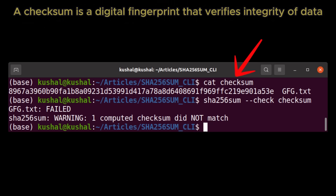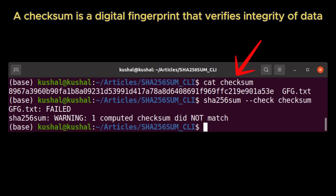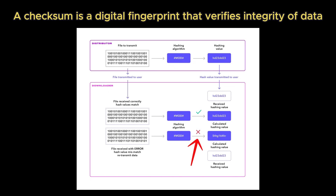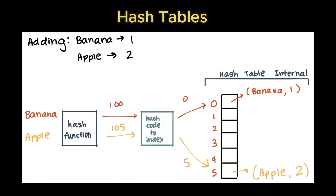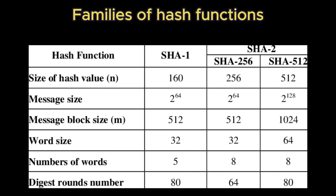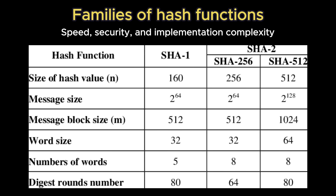Checksums use algorithms like SHA-256 to create a file's fingerprint for integrity checks, and hash tables leverage a hash function to map keys to array indices for data retrieval in constant average time, or O(1). There are multiple families of hash functions, each designed with different trade-offs between speed, security, and implementation complexity.